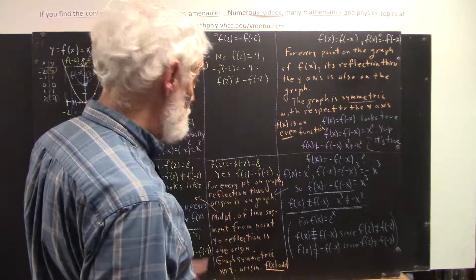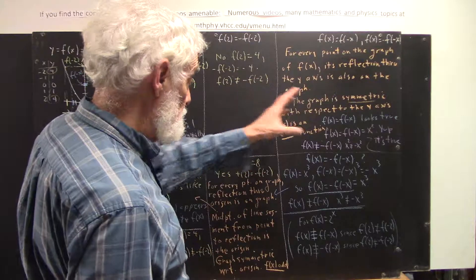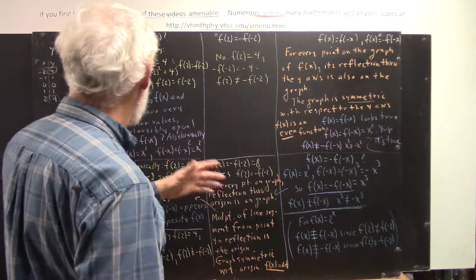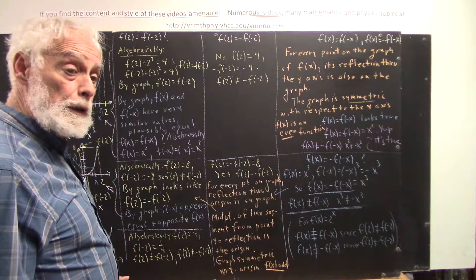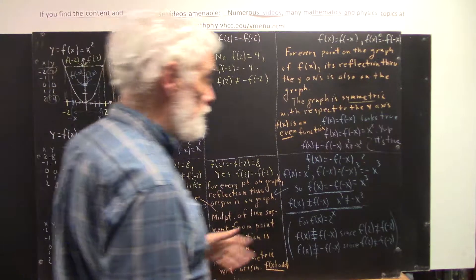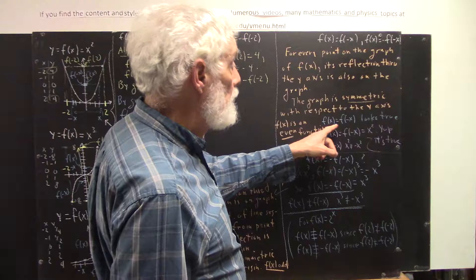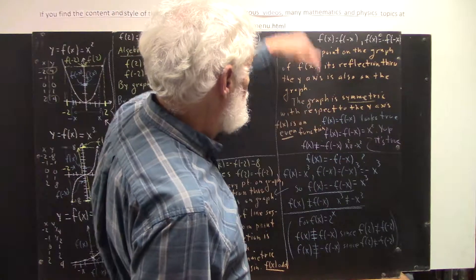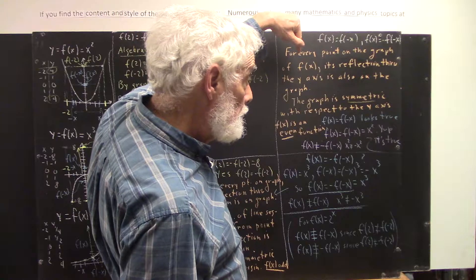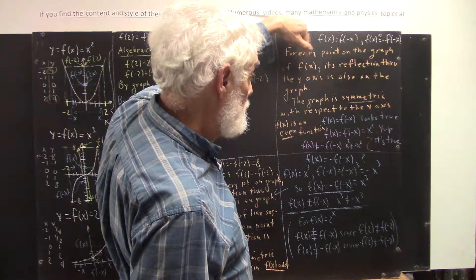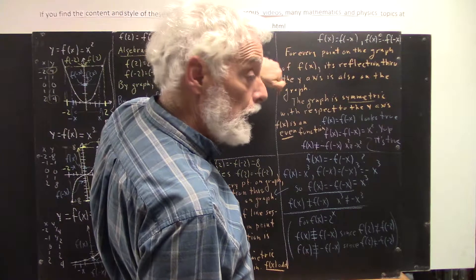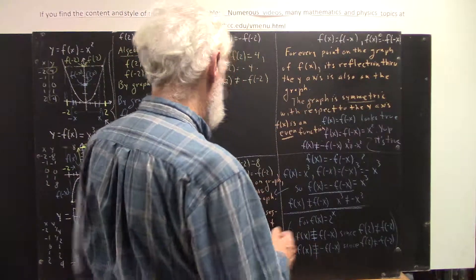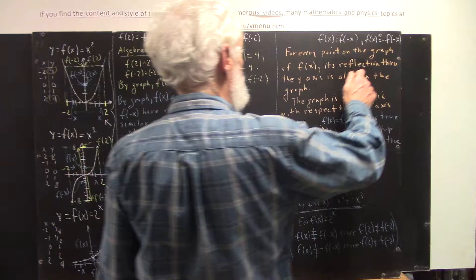We have some equivalent statements — statements equivalent to the properties we've seen. For f(x) = x², and in fact for any function where f(x) is always equal to f(-x), we can say that for every point on the graph of that function, its reflection through the y-axis is also on the graph. What do we mean by the reflection through the y-axis?